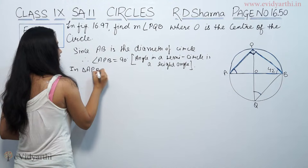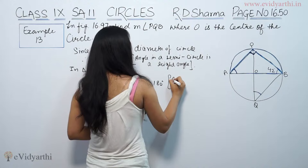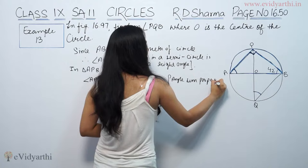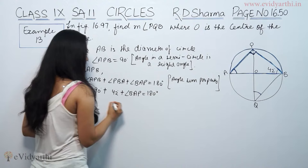In triangle APB: angle APB plus angle PBA plus angle BAP is equal to 180 degrees, by the angle sum property. So substituting: angle APB is 90 degrees, angle PBA is 42 degrees, plus angle BAP equals 180 degrees.